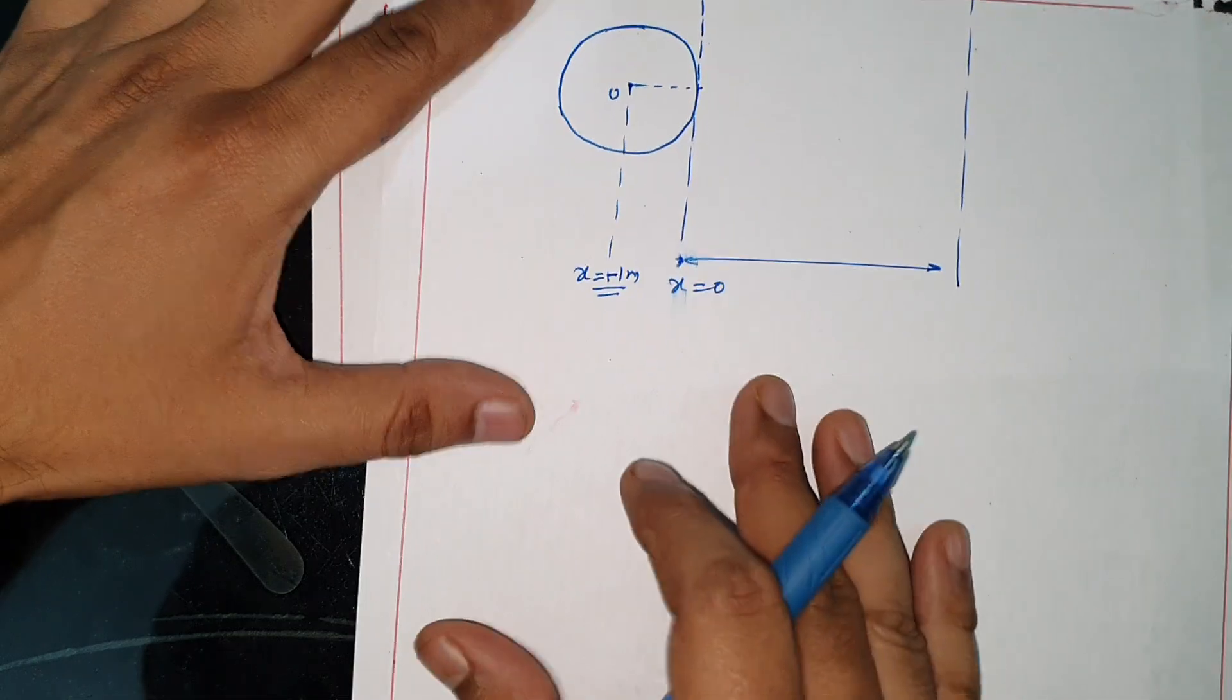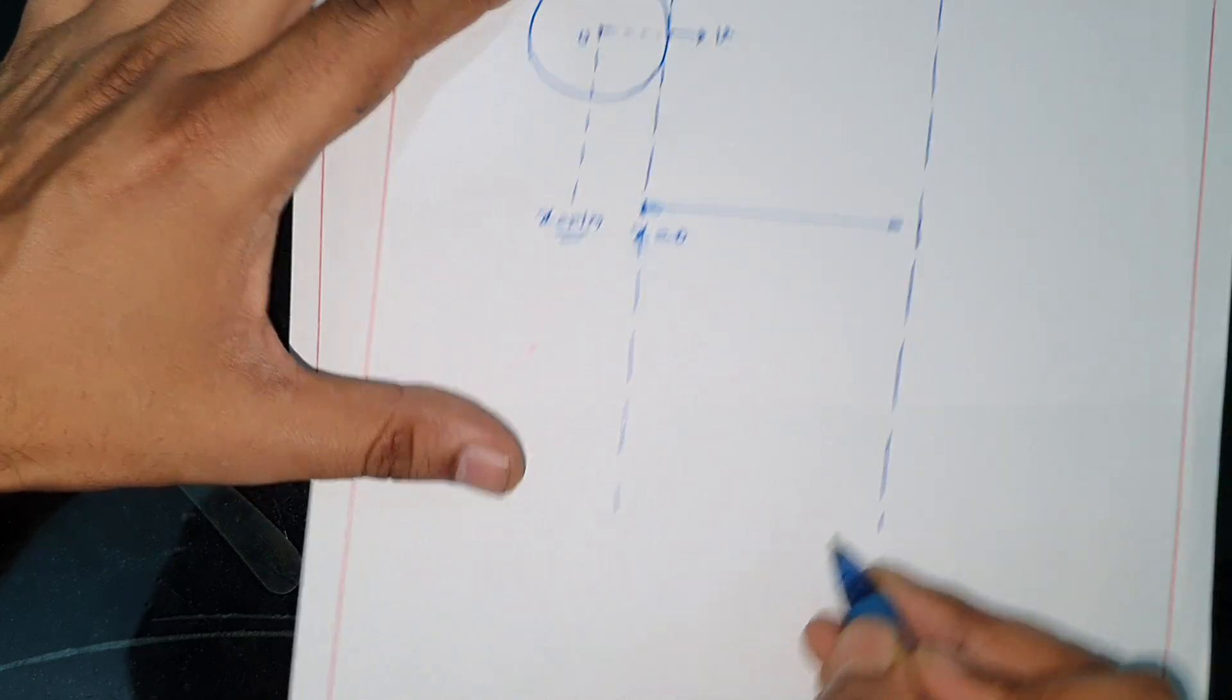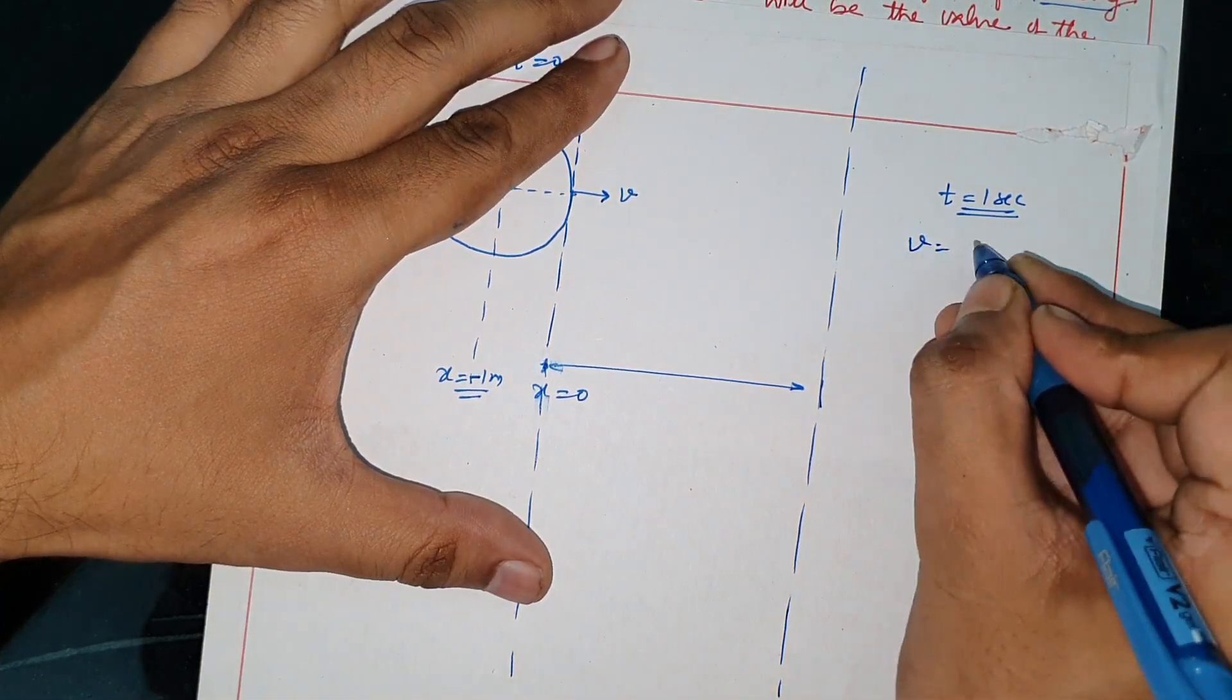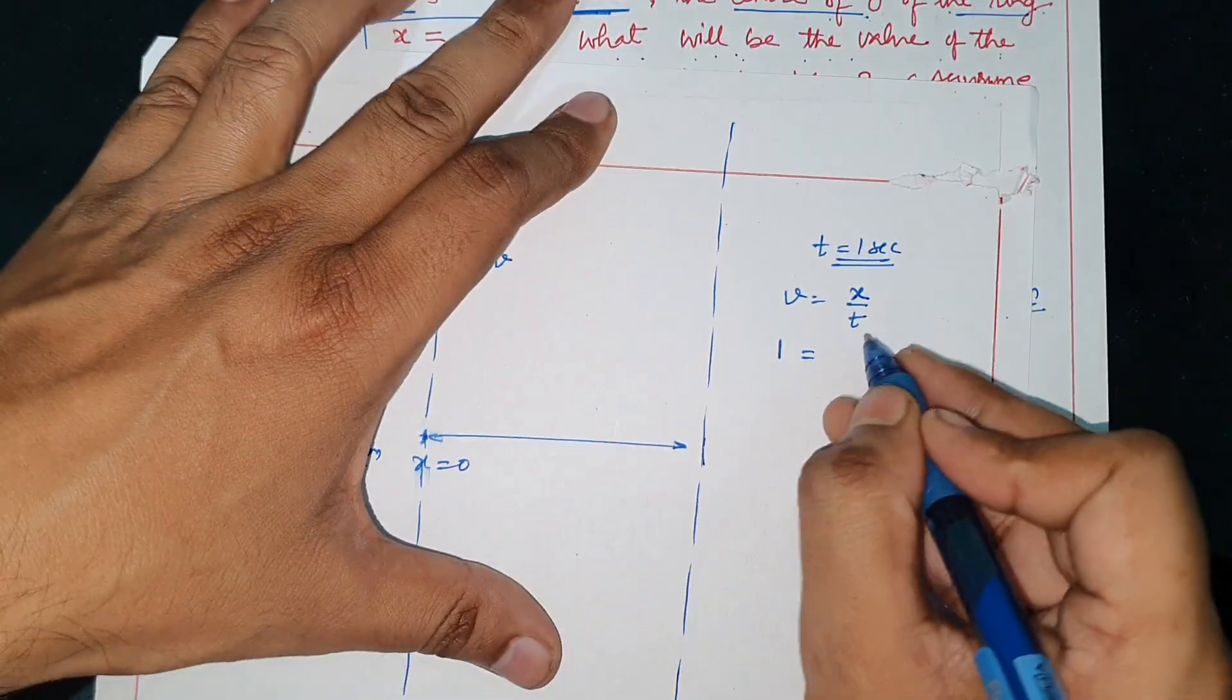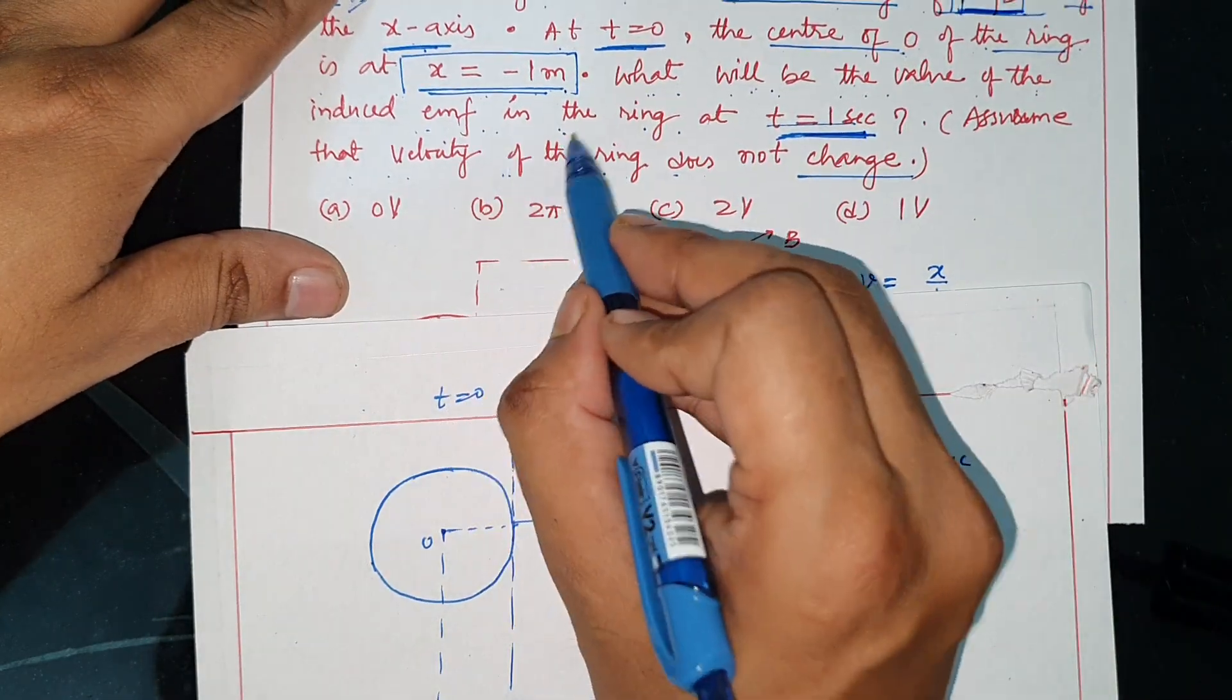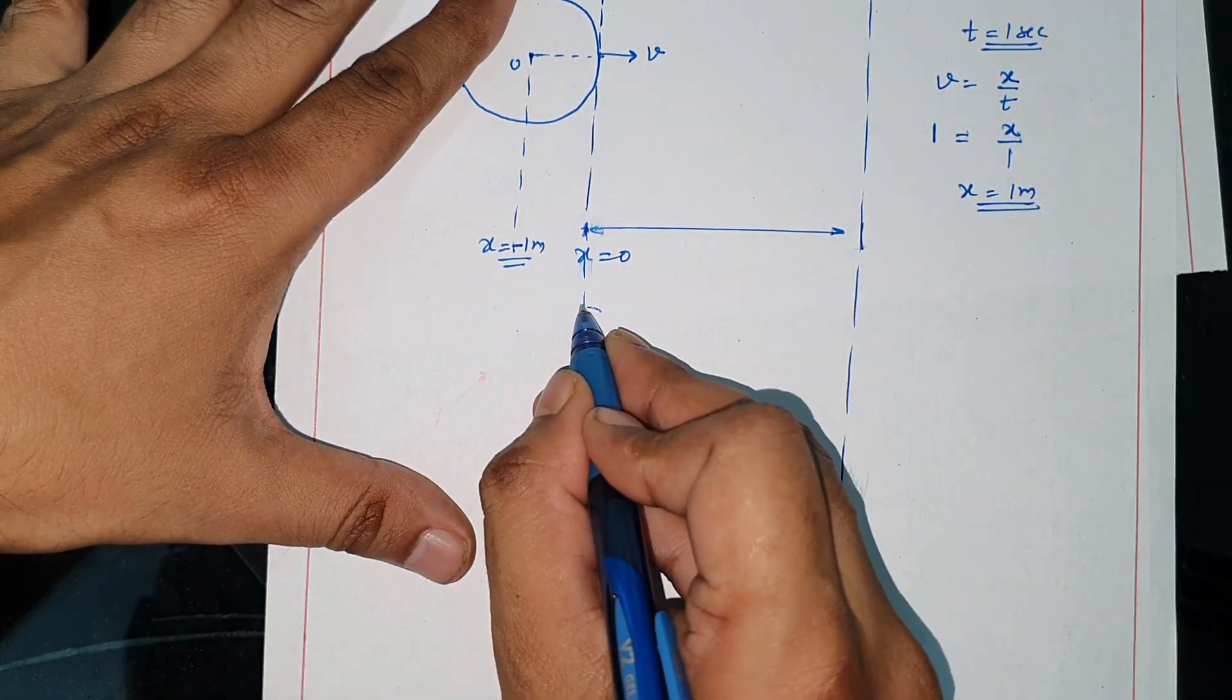What will be the value of induced EMF in the ring at t = 1 second? So, x will be equal to 1 meter. Then, 1 second after this, the distance will be in the middle.